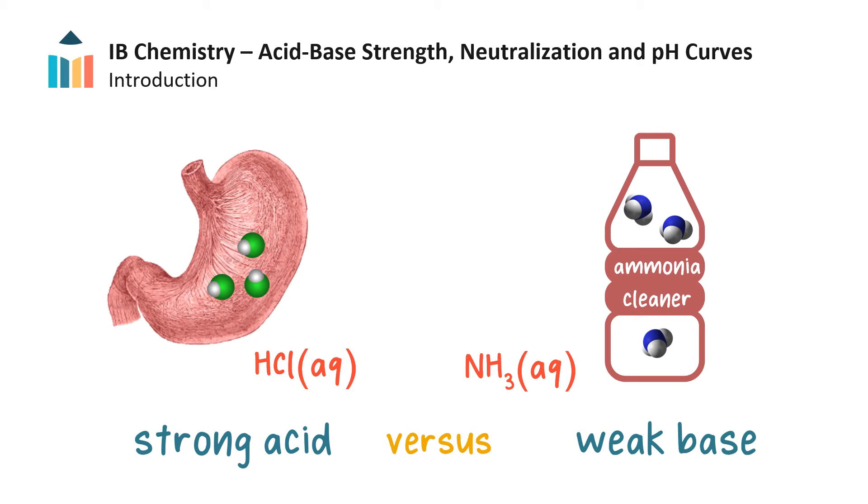Acids and bases have different strengths. For example, stomach acid is a strong acid while ammonia is a weak base. Here we will learn what this means.